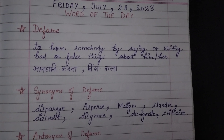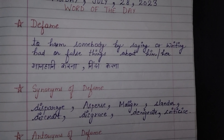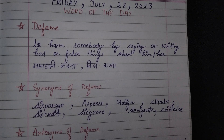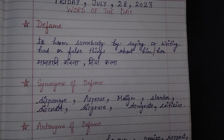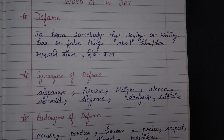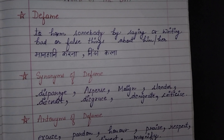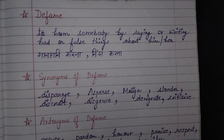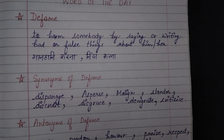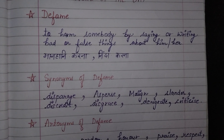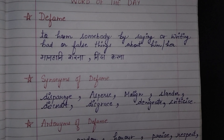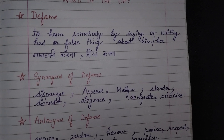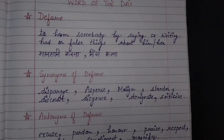So this is the meaning of word defame: to harm somebody by saying or writing bad or false things about him or her. Yarni ki galat chizay bol ke kisi insaan ki reputation ko down karne ki kooshish kar rahe hai. In that case we use the word defame — someone is trying to defame me. Ek hota hai fame yarni ki famous, to fame ka joh opposite hai wo hai defame, yarni ki ninda karna, maanhani karna, to harm somebody.